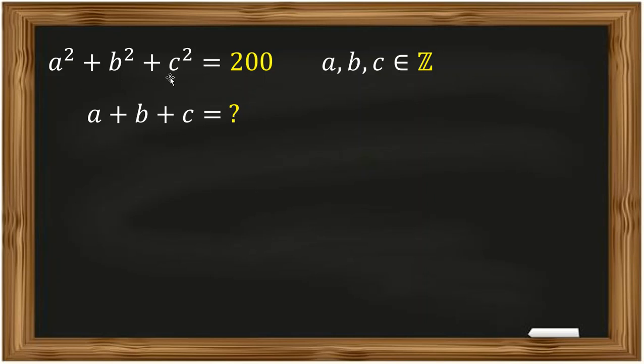a squared plus b squared plus c squared equal to 200, a, b, c are integers, a plus b plus c is?